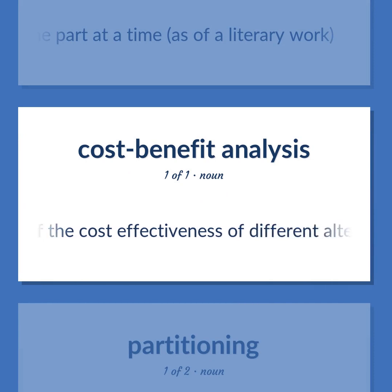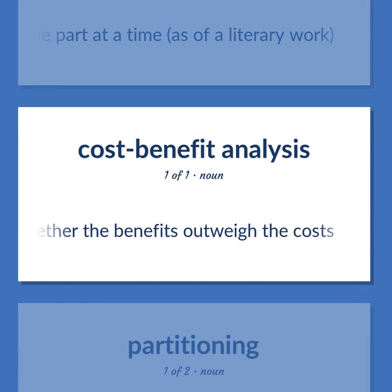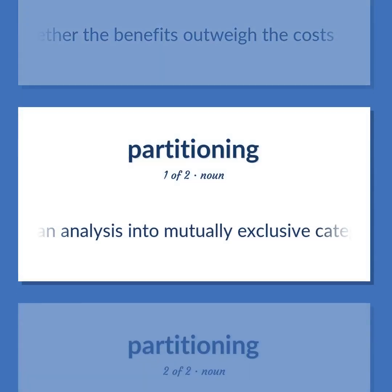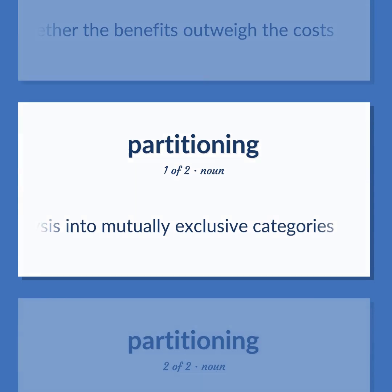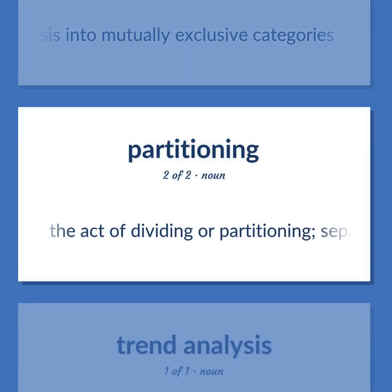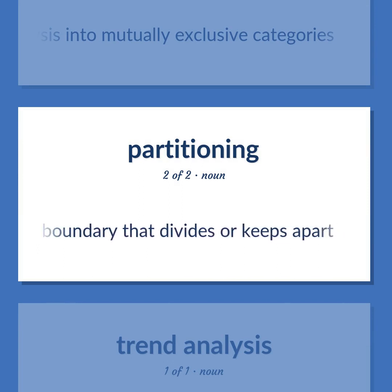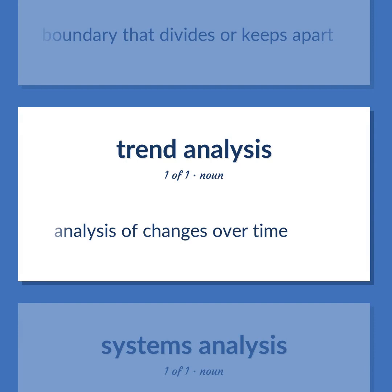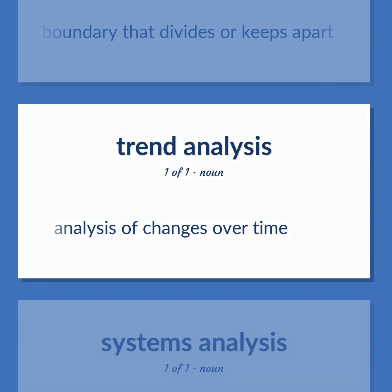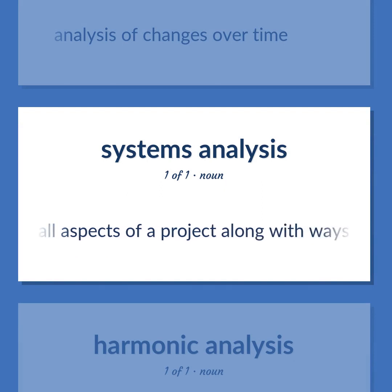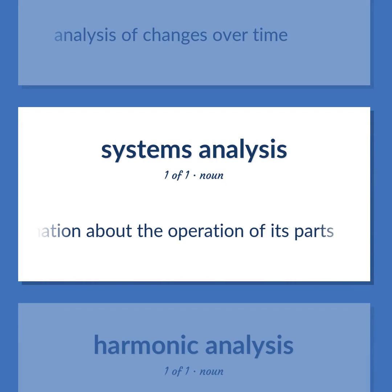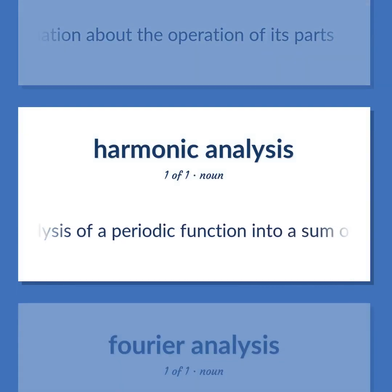Cost-benefit analysis: An analysis of the cost-effectiveness of different alternatives in order to see whether the benefits outweigh the costs. Breakdown: An analysis into mutually exclusive categories. Partition: The act of dividing or partitioning; separation by the creation of a boundary that divides or keeps apart. Time-series analysis: Analysis of changes over time. Systems analysis: Analysis of all aspects of a project along with ways to collect information about the operation of its parts. Fourier analysis: Analysis of a periodic function into a sum of simple sinusoidal components.